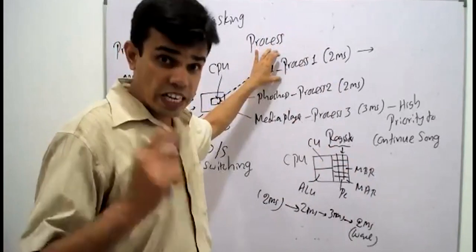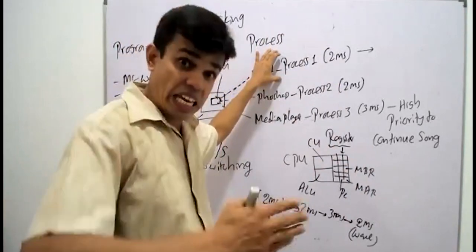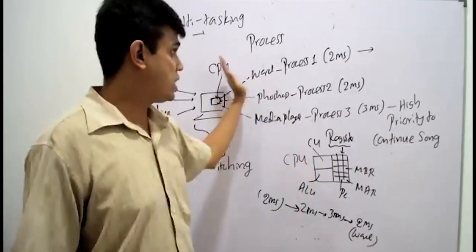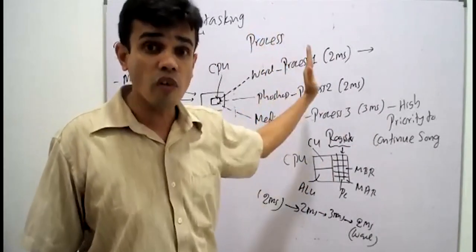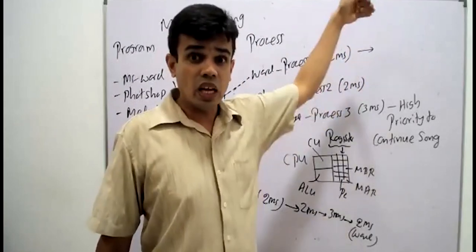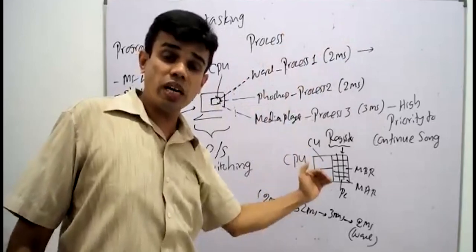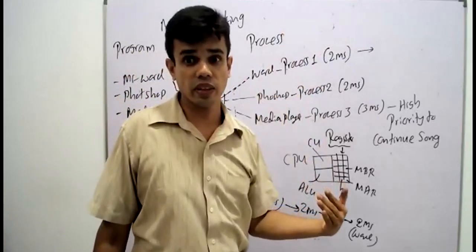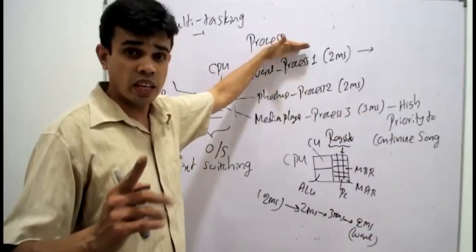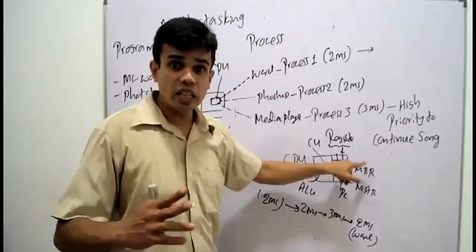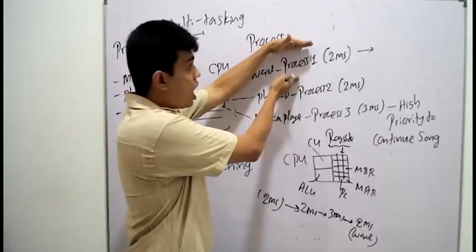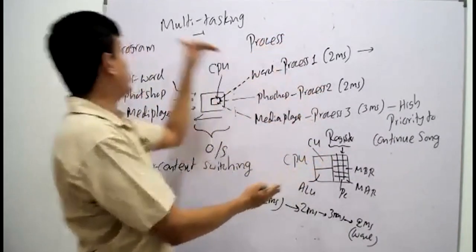When Word is assigned for the second time, should it start from the beginning or from where it stopped in the earlier two milliseconds? From where it stopped. So once the two milliseconds are over, the details of that process must be saved somewhere, and then loaded from that saved location whenever the next chance comes. Context switching means the context of the process — the MAR, MBR, BCR, and ALU values — are switched from process to process in multitasking.